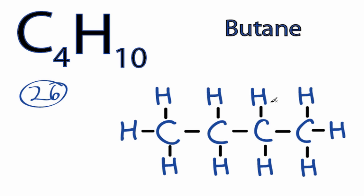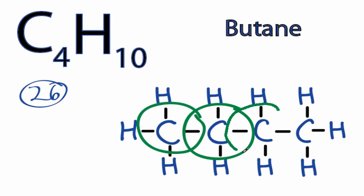So we've used all 26 valence electrons for the C4H10 Lewis structure, and we can see that each carbon has four single bonds. Since each single bond has two valence electrons, that means that each carbon has an octet.